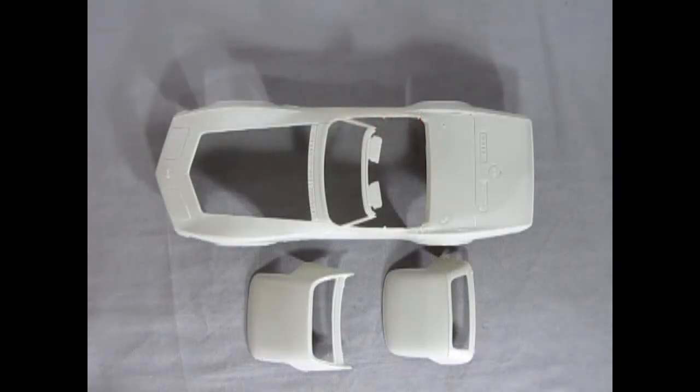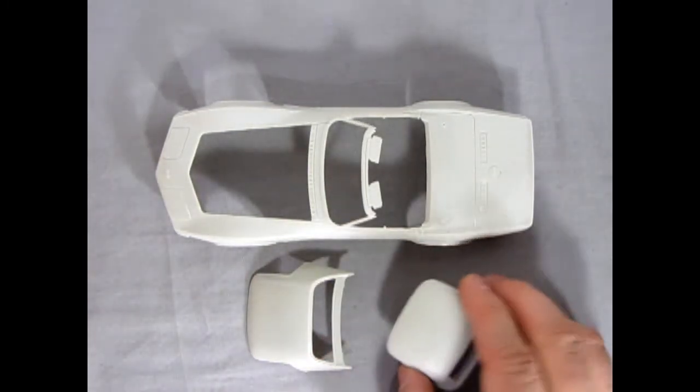So here we have the convertible tops. This one, of course, being the hard top with the convex-type window. And then we've got our convertible here. And actually, I guess it's concave. Hey, concave goes inward.